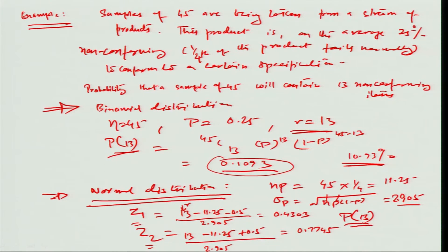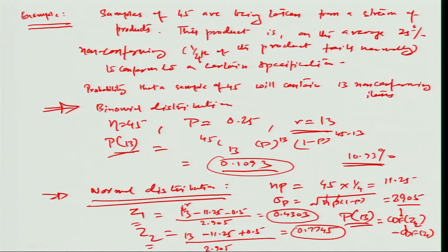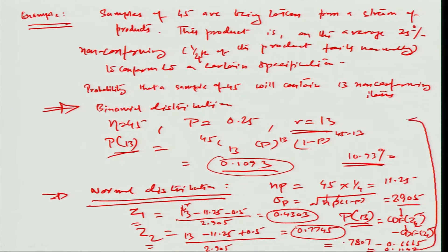The probability of exactly 13 rejects is the area under the curve up to z₂ minus the area up to z₁ — that is, CDF(z₂) − CDF(z₁). From the normal tables, these values are 0.7807 − 0.6665 = 0.1142. With the normal distribution and local continuity, we get about 11.42 percent, which is very close to the binomial result of 10.93 percent.